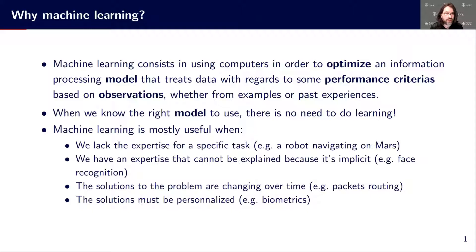Sometimes we have some expertise that cannot be explained because it's implicit. For example, face recognition is a really nice example of that. We know we are really good at recognizing faces. In fact, newborn babies are really good at recognizing the face of their mother and their father by nature. Even as an adult, we are really good at recognizing faces, but we are much less good at explaining why this is that person, because it's something that is not conscious, that is not easy to explain. So if we have to label faces, we would be really good at labeling it. But if we have to explain to the computer how to recognize that specific face, this is another story.